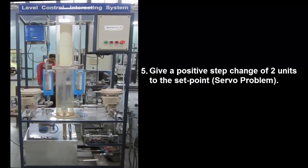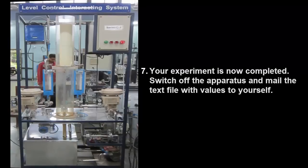The next step in the experiment is to give a positive step change of two units to the set point which is a servo problem. After the steady state is reached, now give a negative step change of two units to the set point. Your experiment is now completed.